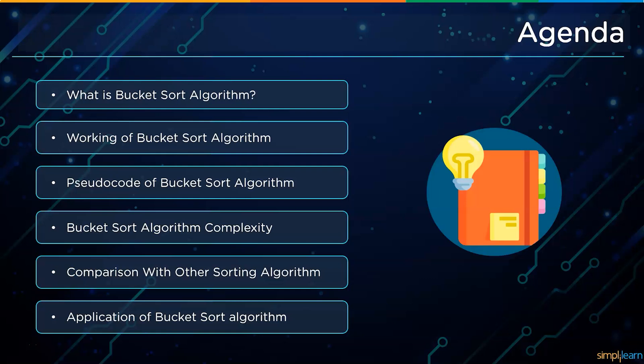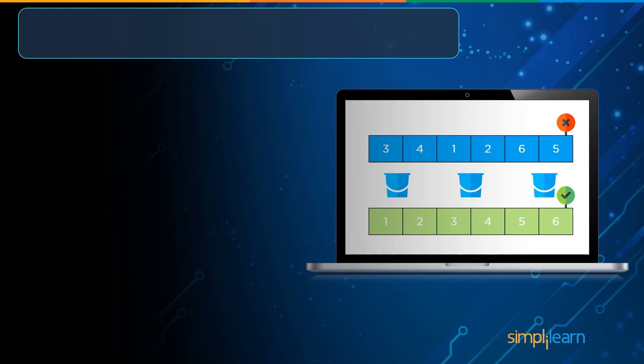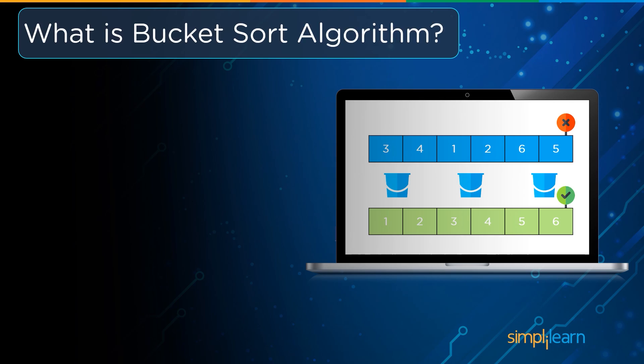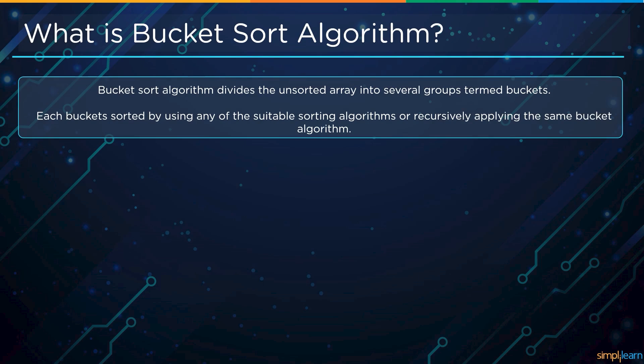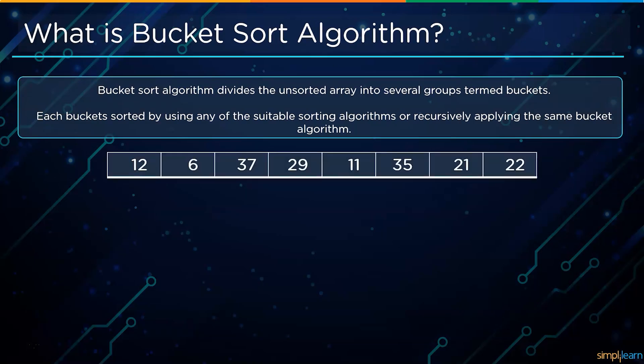Let's get started with our first concept — what exactly is a bucket sort algorithm. The bucket sort algorithm divides the unsorted array into several groups known as buckets. Each bucket is sorted using any suitable sorting algorithm or by recursively applying the same bucket sort algorithm. On screen we have an example array consisting of numerical elements: 12, 6, 37, 29, 11, 35, 21, and 22.